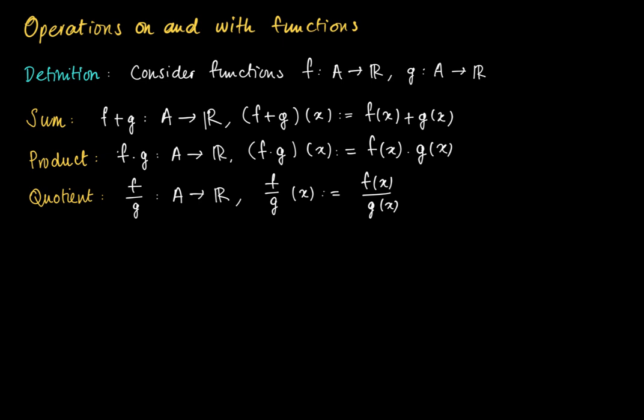So f divided by g evaluated at some number x equals f(x) divided by g(x), provided that g(x) is non-zero for all x in A. Otherwise we would need to leave this x out.